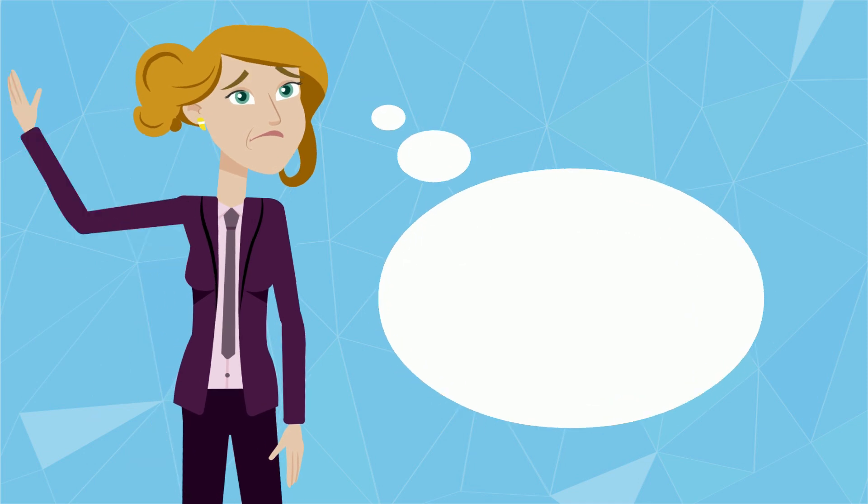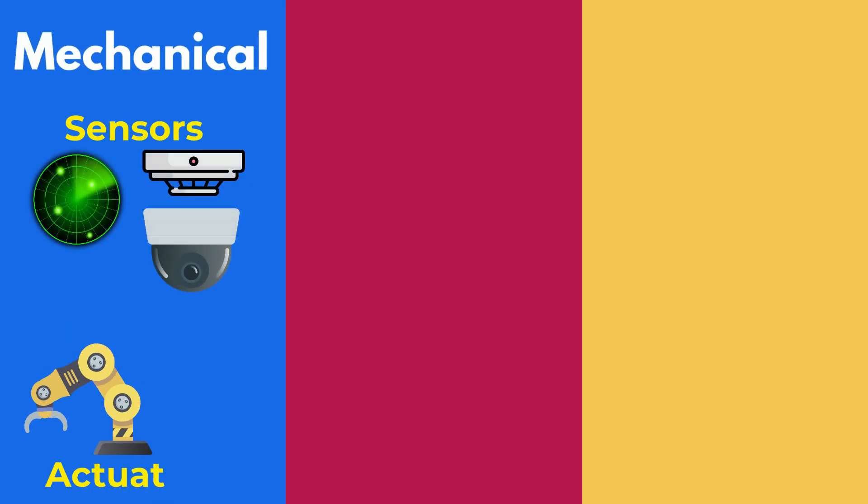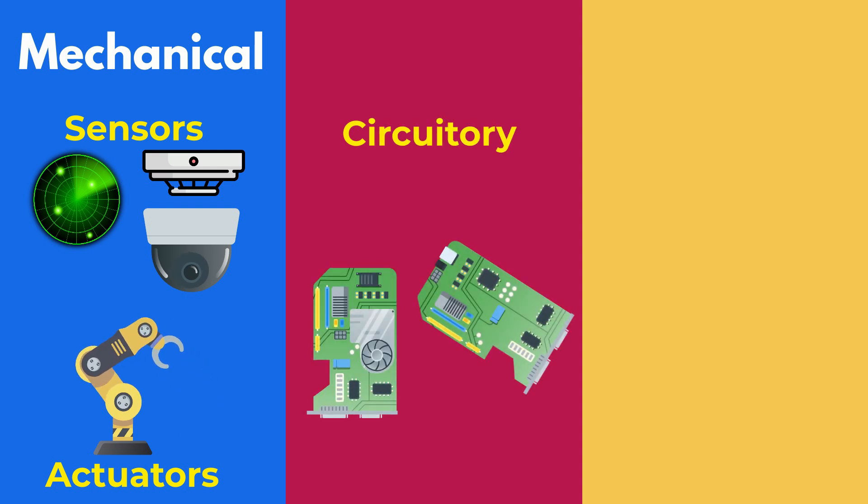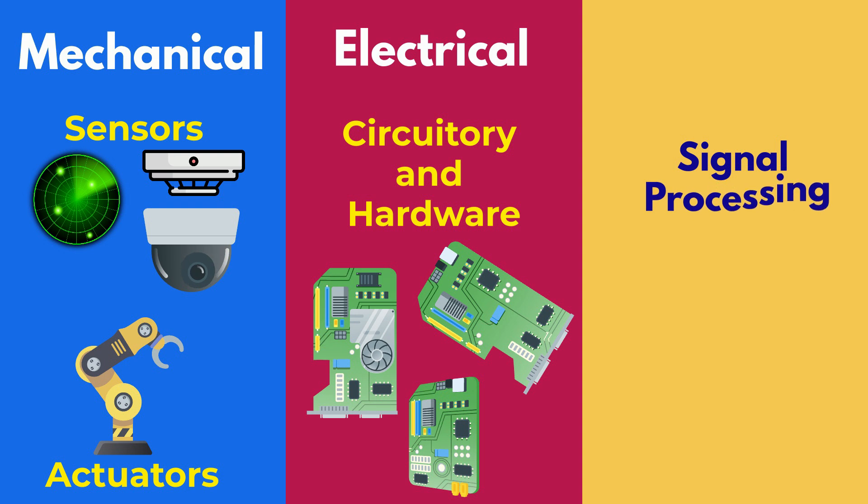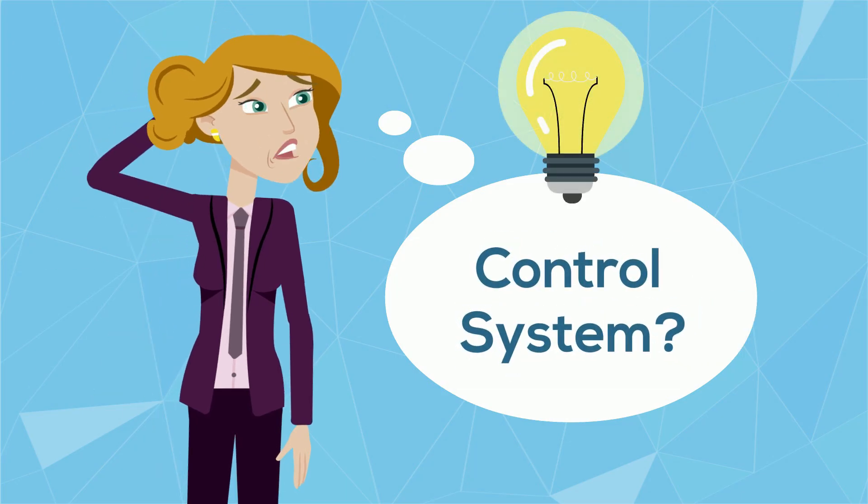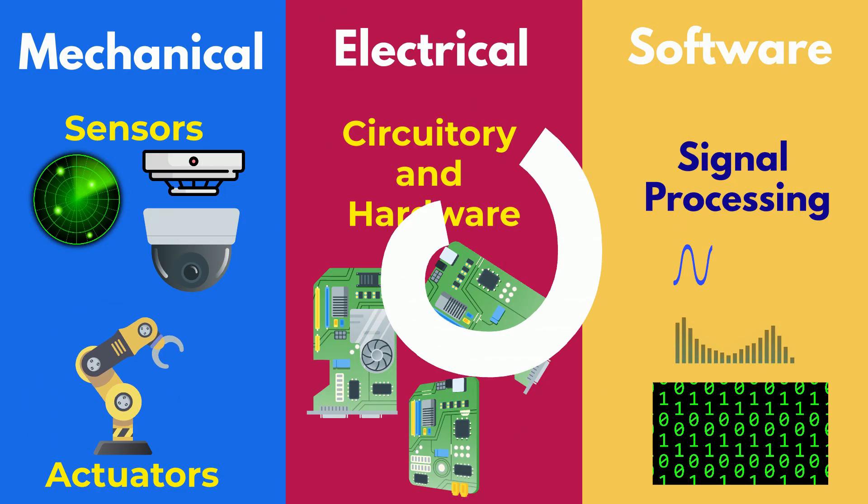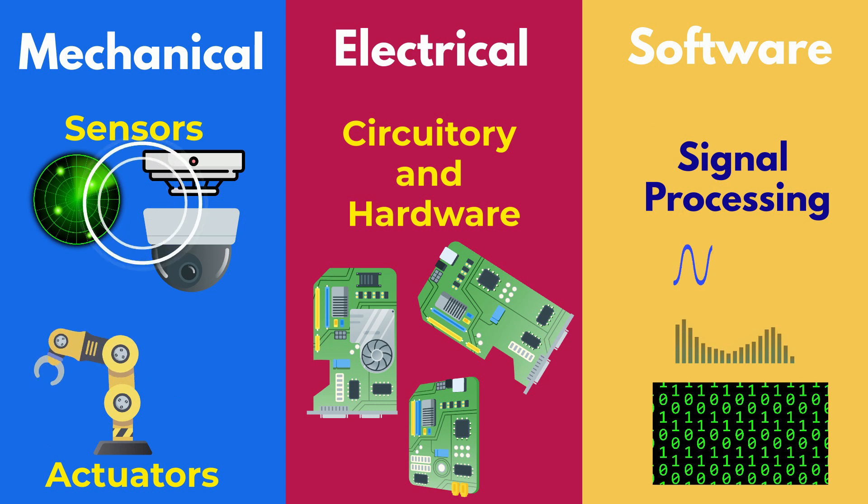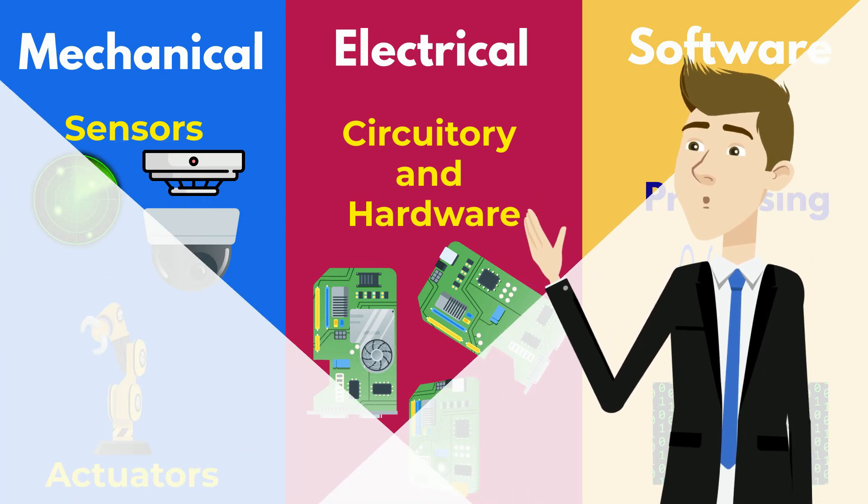Now, if you blinked, you might have missed the mechatronics design amidst the chase. The sensors and actuators were the mechanical aspect, the circuitry and hardware connecting them is all the electrical design, and the fast-acting signal processing is the software component. But where is the control system I keep talking about? Well, it is the entire system, from the first sensor to the smallest actuator. Everything in this controlled environment is our control system.